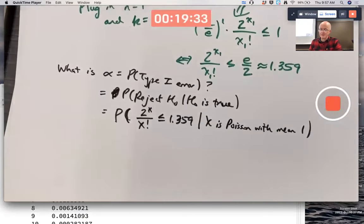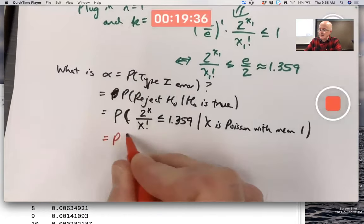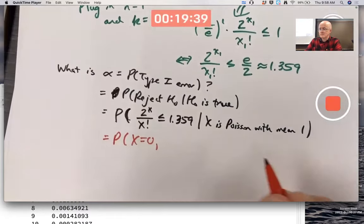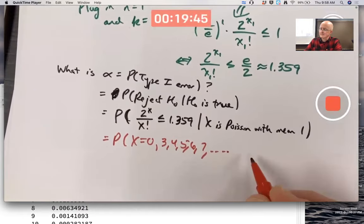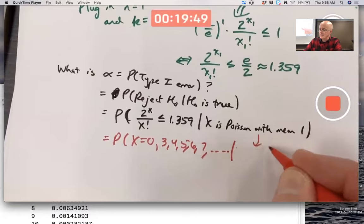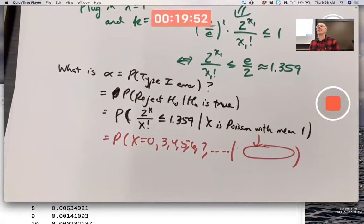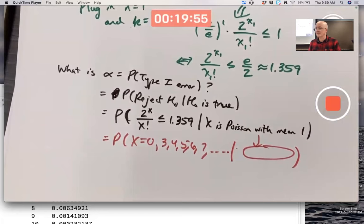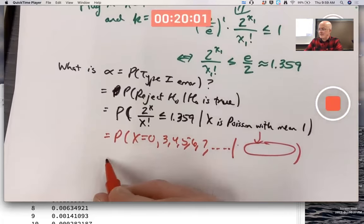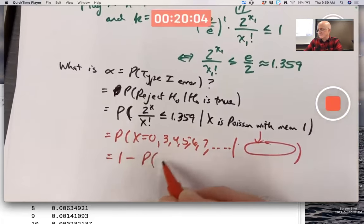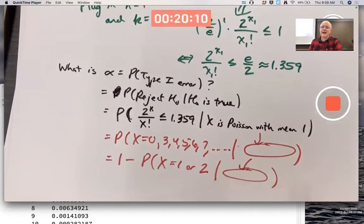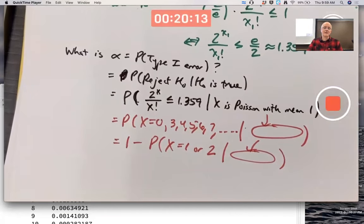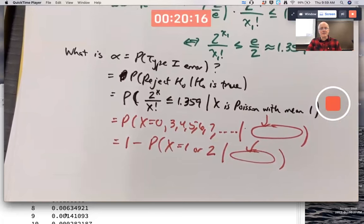So this probability is the same as the probability of x equaling 0, 3, 4, 5, 6, 7, etc. Given x is Poisson with mean of 1. Not 1 or 2. Simplest way to compute that probably would be use the complement rule. Like that.